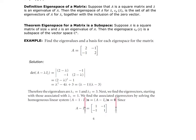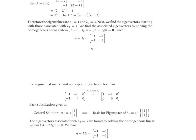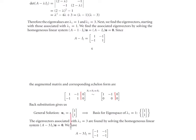For lambda equal to 1, subtracting the identity matrix from A gives [1, −1; −1, 1]. Augmenting a column of zeros and row reducing gives one free variable and one dependent. The general solution is u = s[1, 1], and the basis for the eigenspace for lambda₁ = 1 is {[1, 1]}.